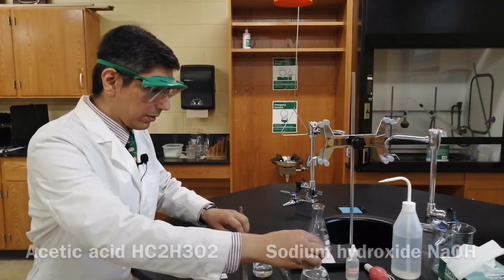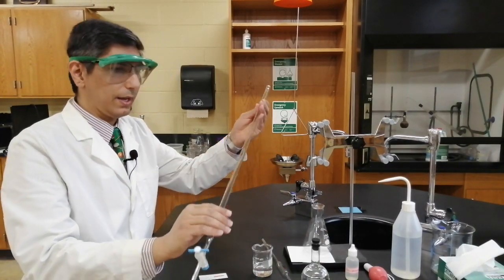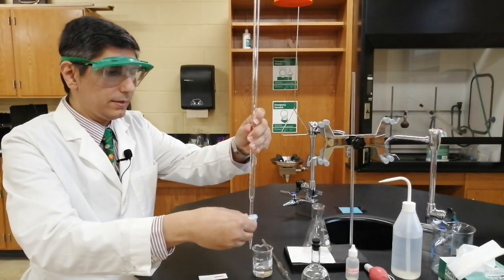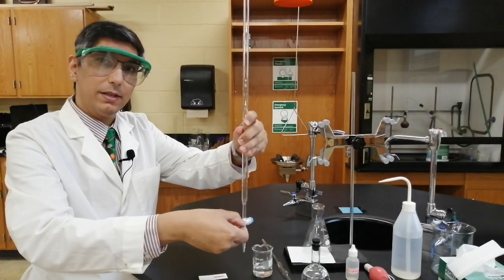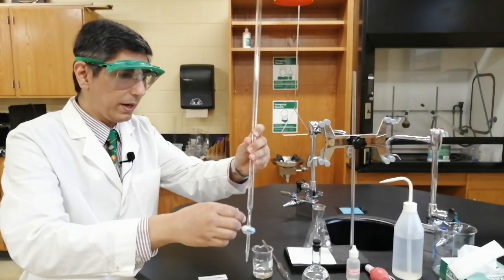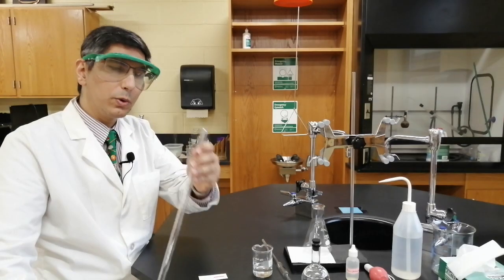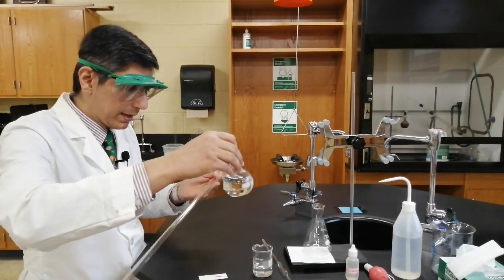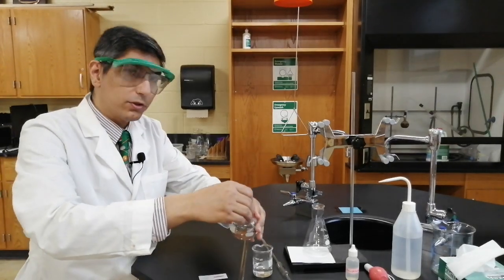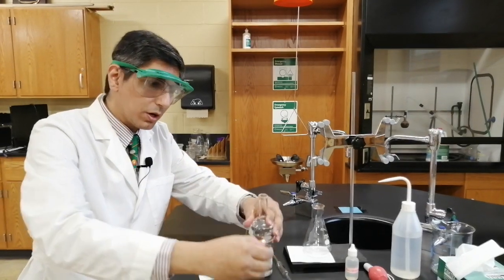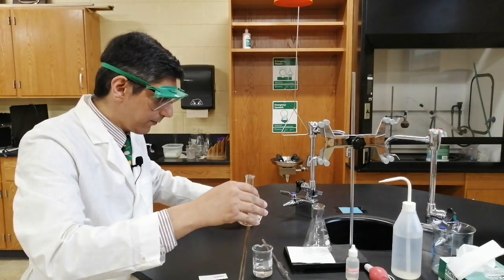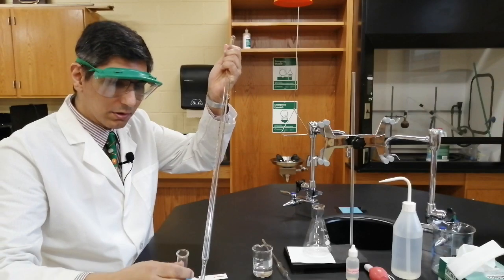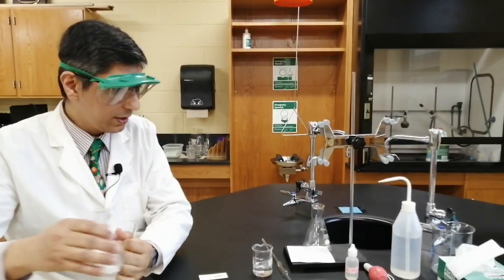To start with, you want to take a burette. This is a burette here. It has a tube here and a stopcock, which allows you to dispense a very precise amount of sodium hydroxide. First of all, we're going to rinse this out. So the first thing you want to do is rinse out your burette with a small amount of the solution it's going to be containing.